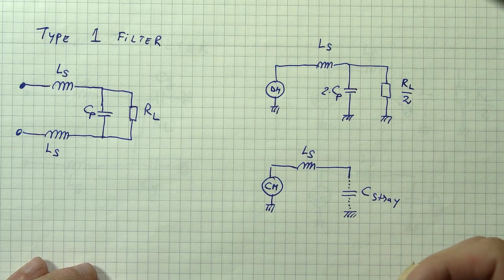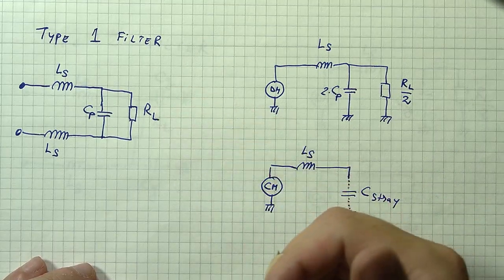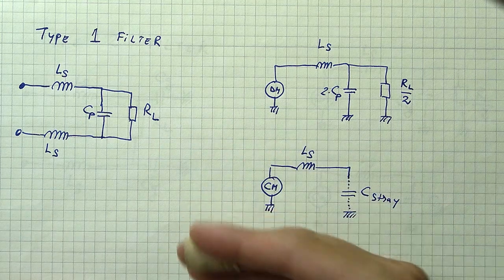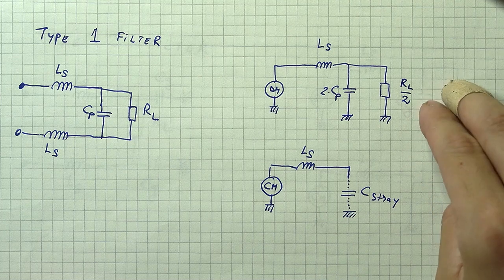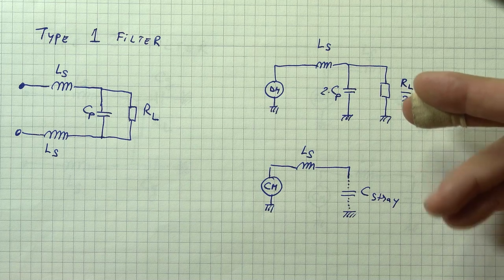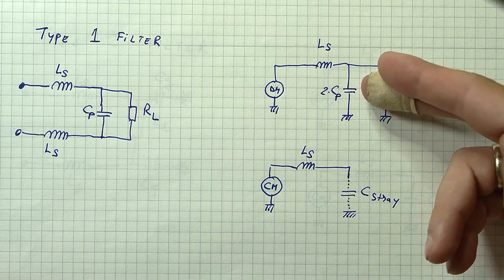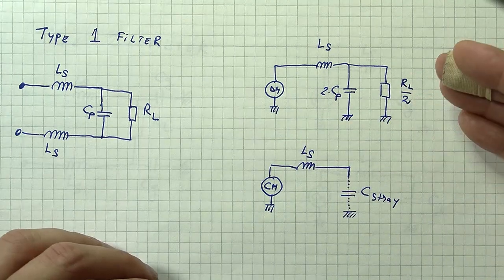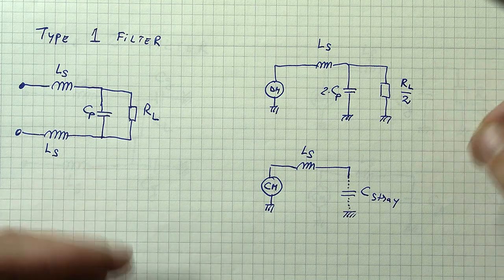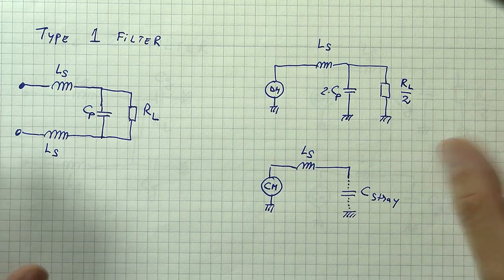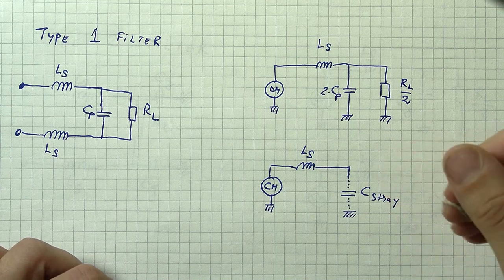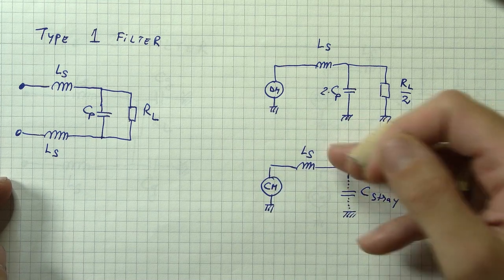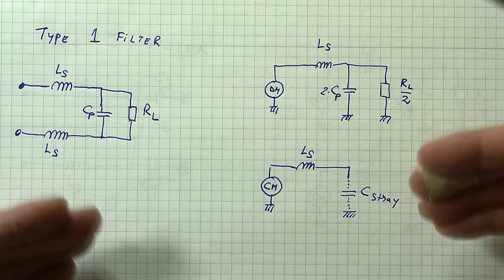Starting with the need to tackle the differential mode signal, the most common approach is using a Type 1 filter — built with two series inductors and one parallel capacitor, after which the load is connected. To simplify analysis, we can create an equivalent circuit: for differential mode analysis we just need one inductor equal to the series inductor, one capacitor equal to double the parallel capacitor, and a resistor equal to half the load resistance. Although considered a purely differential mode filter, to a small extent it will also filter common mode noise — the larger the series inductor, the better.